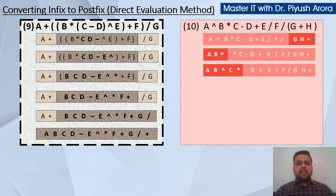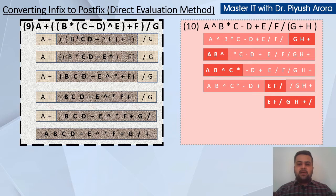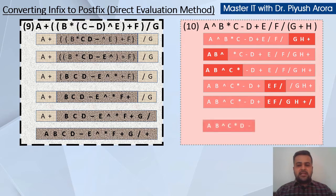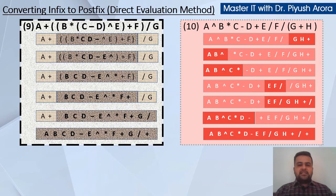Now e divide f, divide g h plus — suppose you have x, so it is e divide f divide x. So it becomes e f divide. The rest of the left and right side expressions are written as it is. Now with the divide that is between ef divide and g h plus, so it becomes ef divide g h plus, and the middle divide goes to the right side. Now evaluate the left side: c multiplication, then minus d — because up to c multiplication, x was already evaluated in red, so d becomes minus. Write the rest of the expression as it is, and the plus before e is sent to the right side.